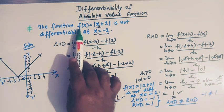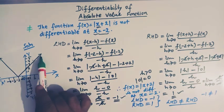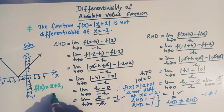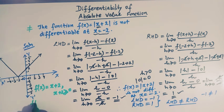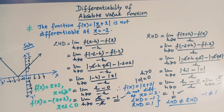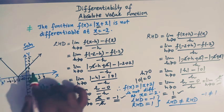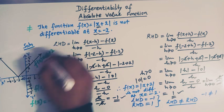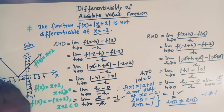The graph of f(x) = |x + 2| is drawn here. We can define f(x) as x + 2 whenever x + 2 ≥ 0. In the graph, this line represents f(x) = x + 2 and this line represents f(x) = -(x + 2).